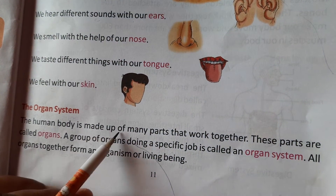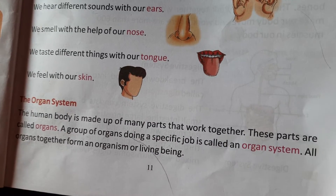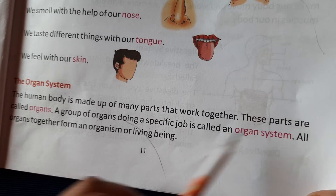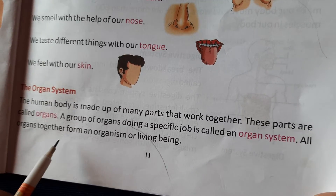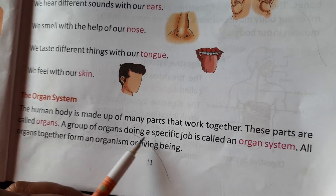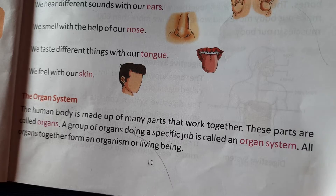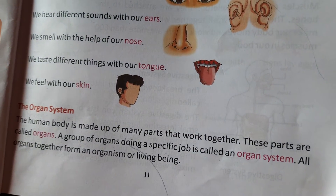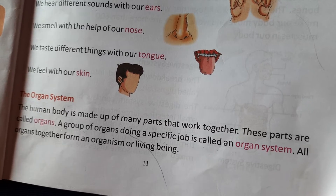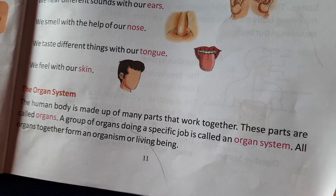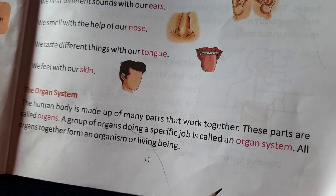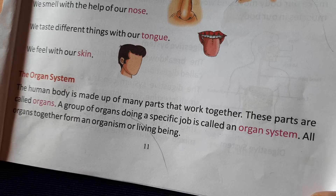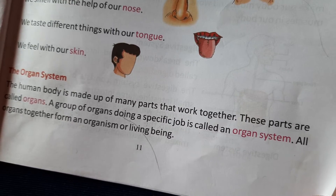The human body is made up of many parts that work together. These parts are called organs. A group of organs doing a specific job is called an organ system. Different organ systems conduct different particular functions. All organs together form an organism or living being.